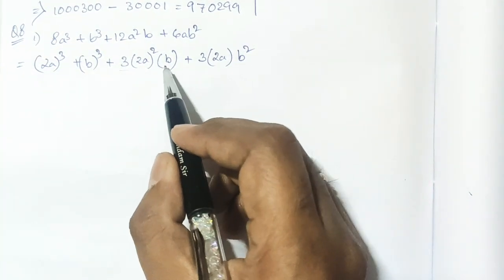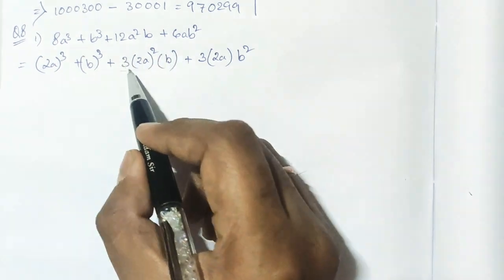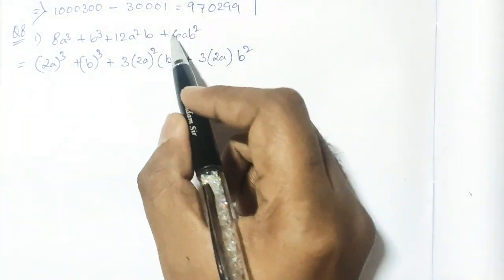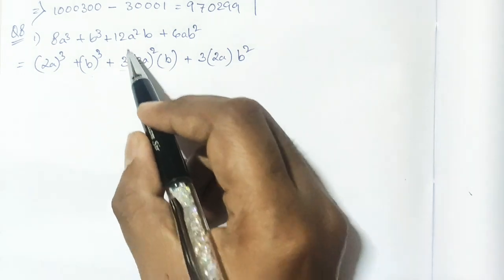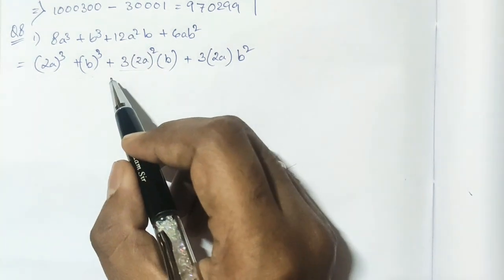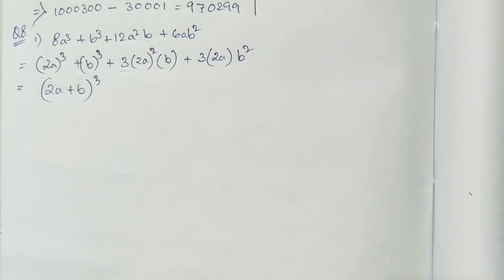We are just checking by writing this. You have to write this by the way, but we are actually checking that if these are equal or not. If these are equal, that means we are going correctly. If these are not equal, that means we have done some mistake here.